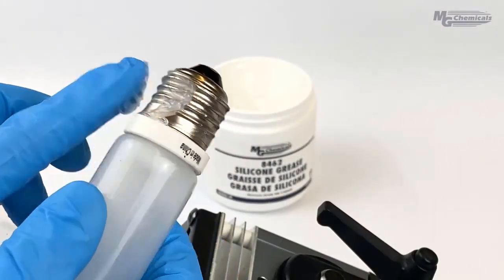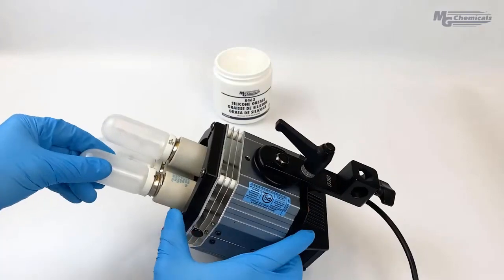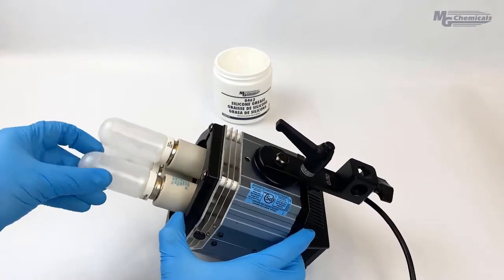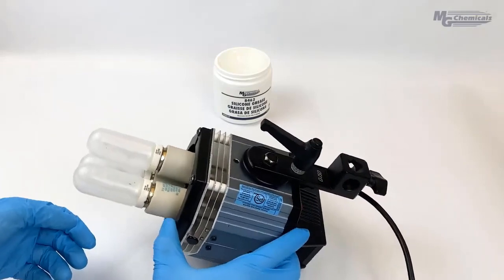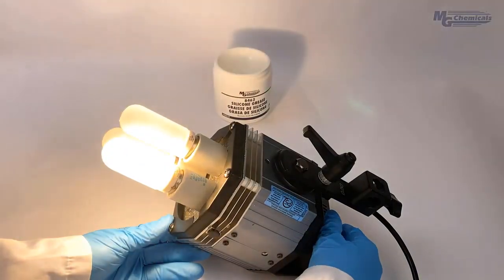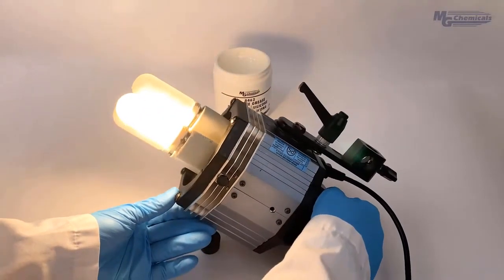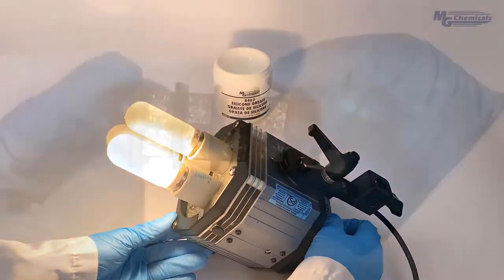It's not necessary to use the grease here, but is more an insurance policy should the light become damp. Take precaution though, as you must not apply the grease at the nipple of the bulb or you'll hinder current flow and the light will not work.